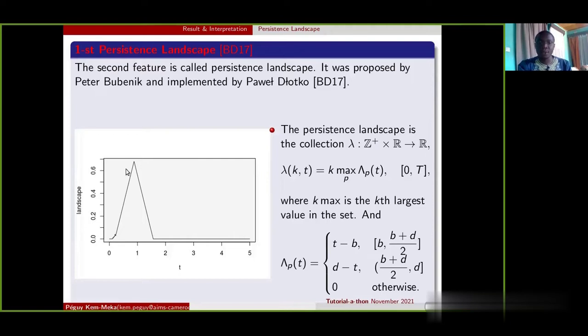When we observe our first persistent landscape, we can see that it is very significant, a proof that we are dealing with a periodic signal.